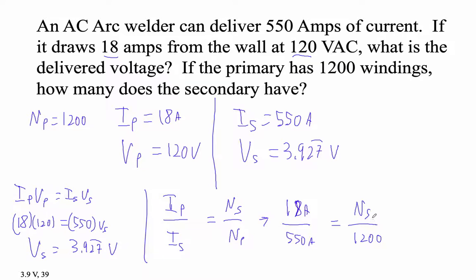So secondary will have fewer windings. And I've just made these numbers up. The number that we're about to get seems highly unlikely. So 18 divided by 550 times 1,200. I'm just cross-multiplying. So I get that the number of windings in the secondary is 39.27 repeating. There's that number again. That's the number of windings.